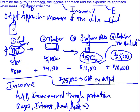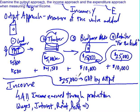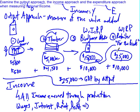Going back to our birdhouse example: as the landowner, you earn $500 from selling access to your land. The timber company pays wages, interest, rent, and profit — all of that $5,000 in revenue becomes income for someone at the company. The birdhouse maker similarly pays wages, interest, rent, and profit. Spending becomes income, and all income paid out to produce this stuff equals $25,000.